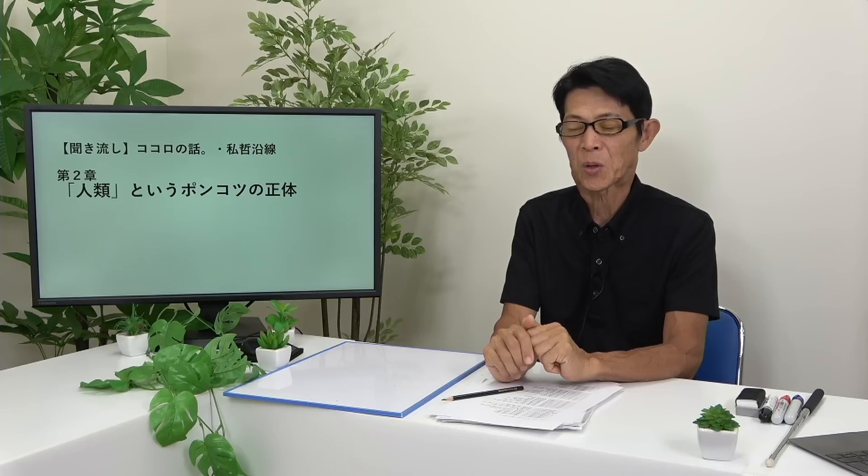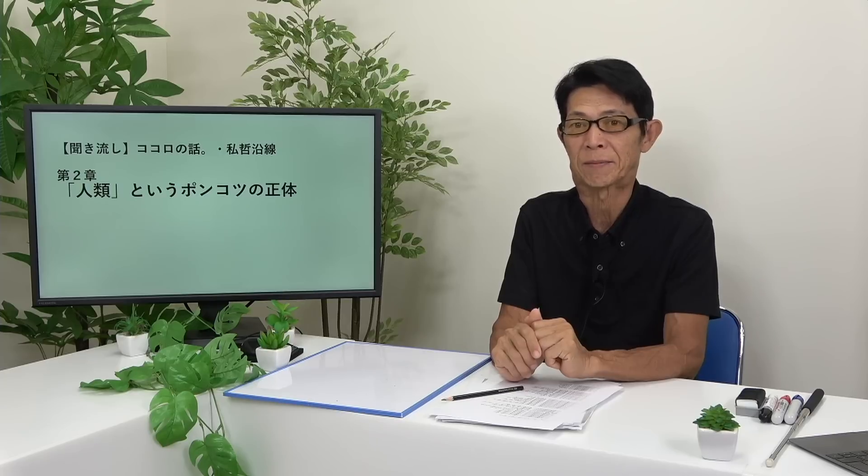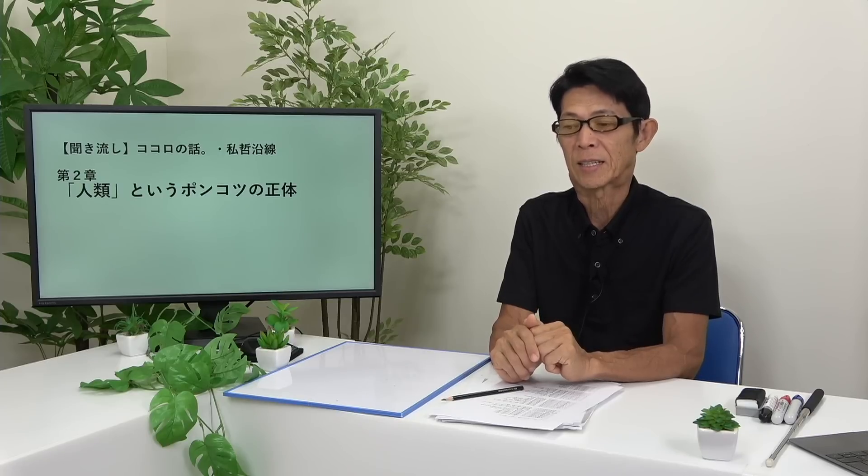本来は、群れるということには必然があって偶然があってって、両方あると思うんですけども、それをしないことができない、っていうことで言えば、ある程度必然ですよね、人類にとって、群れるということは。だから、単独で生きるっていう選択肢と集団で生きるっていう選択肢があるわけではなくて、集団の中でどう生きるかっていう選択肢を、僕らは選んでいるわけですよね。